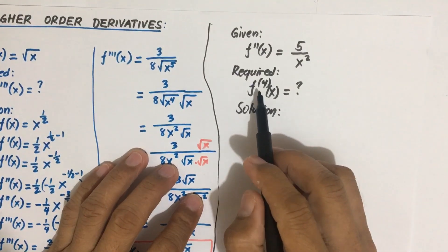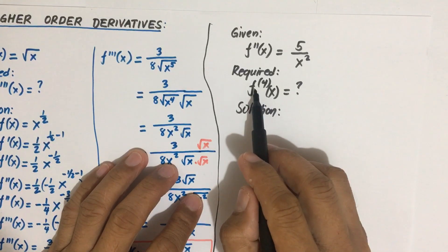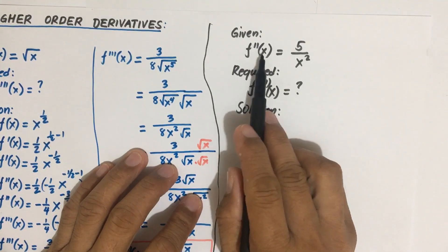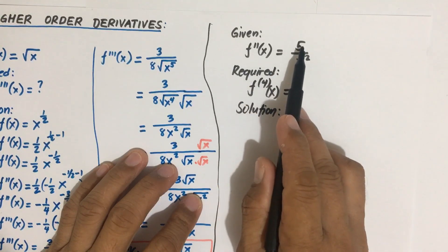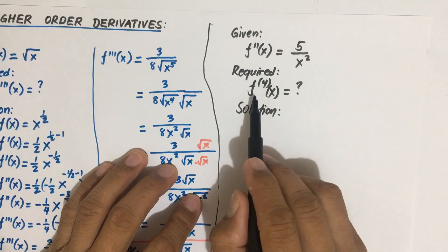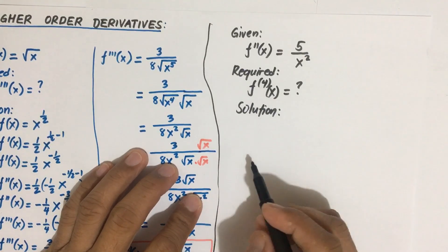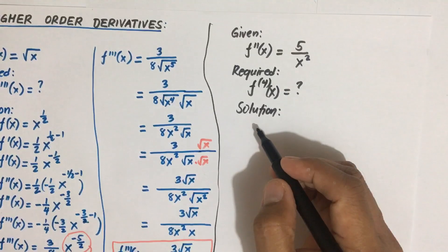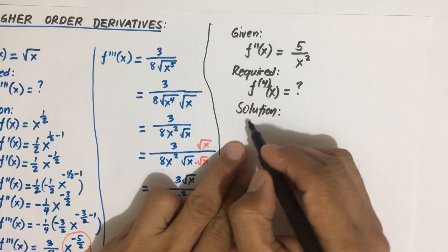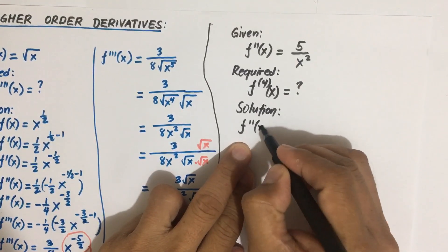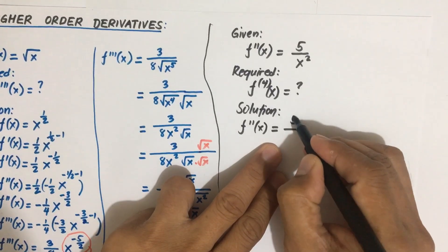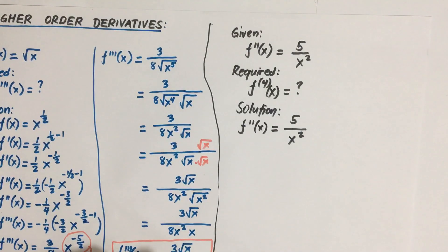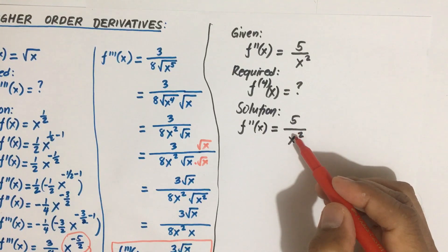It means that we are asked to solve for the fourth derivative of the function F(x). You are given F double prime, or the second derivative of the function, which is equal to five over x squared, and you are asked to solve for the fourth derivative of the function.